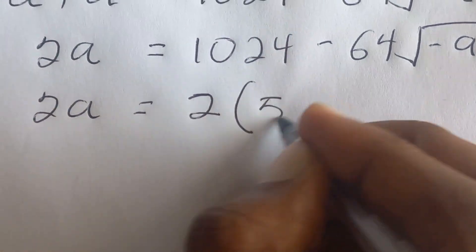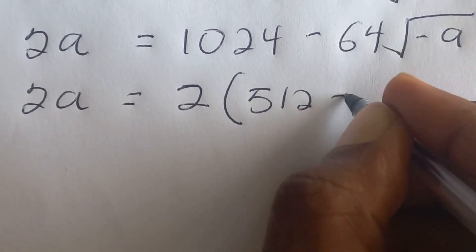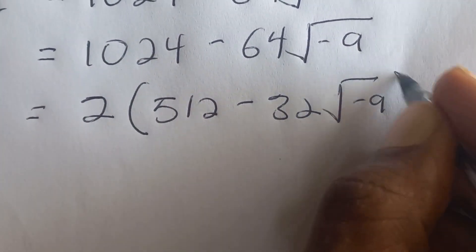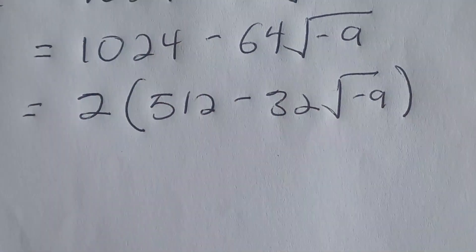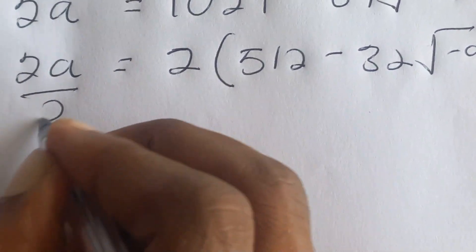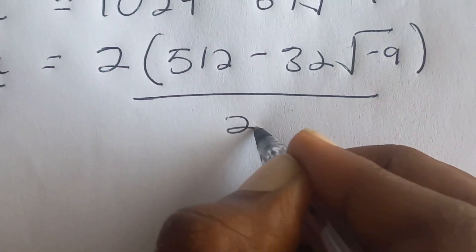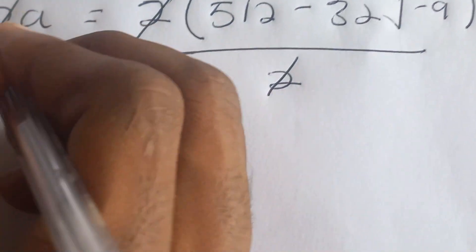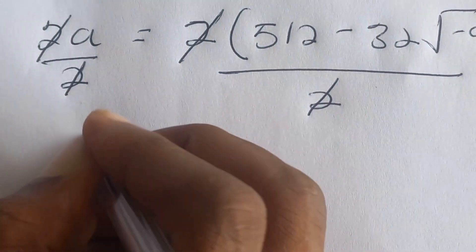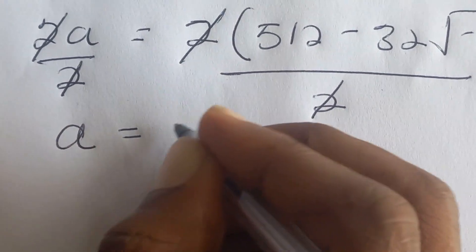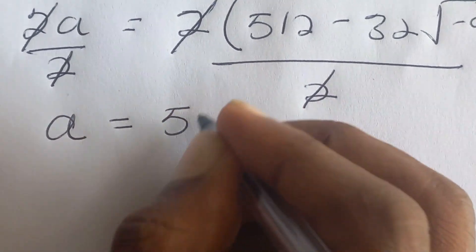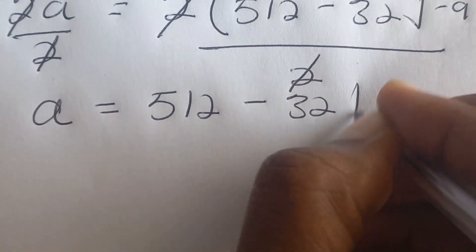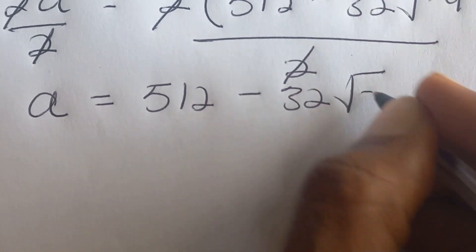Now I will divide both sides by 2. So 2a divided by 2 gives a, which is equal to 512 minus 32 square root of negative a.